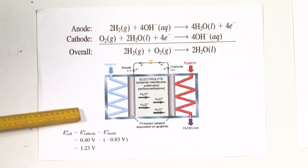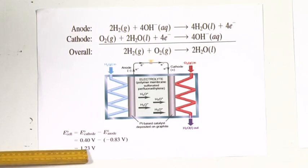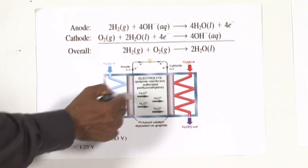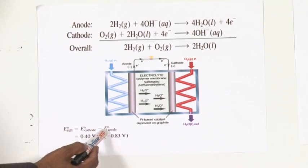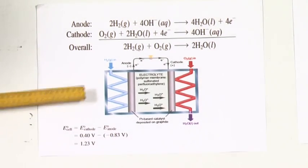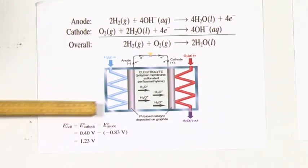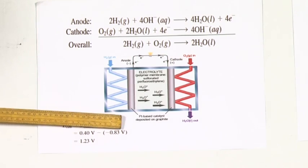The overall voltage that you get is 1.3 volts. As you know, the voltage of any cell, EMF of any cell, is E of cathode minus E of anode. E of cathode would be 0.4 volts. Anode is minus 0.83.